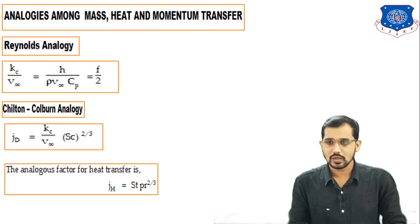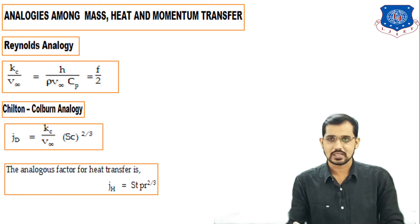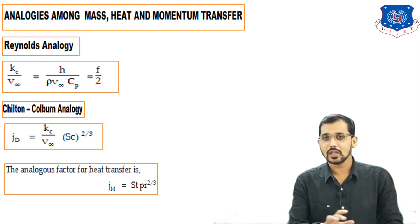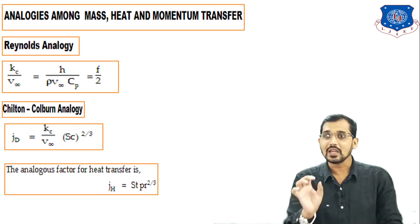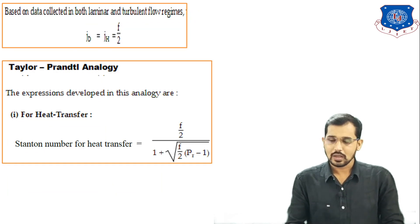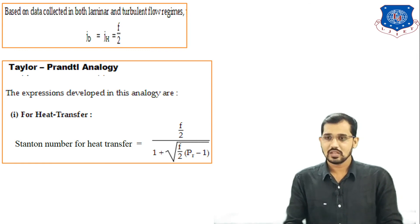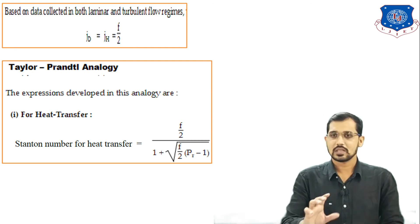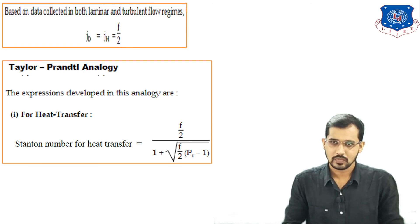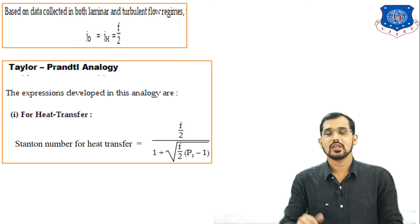All these relations are very important and must be remembered. A separate question for 5 marks can be asked: explain in detail the analogies between mass, heat, and momentum transfer. There is no derivation involved; you just need to remember all equations and the meaning of each term: H, ρ, Cp, f, Sc, St, and Pr. This concludes the lecture; the next topic will be covered in the next lecture. Thank you very much.